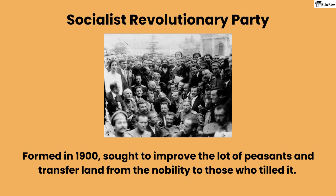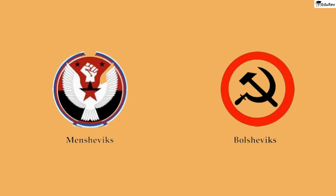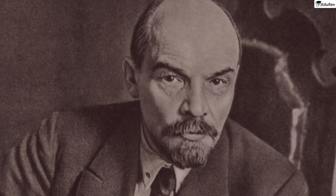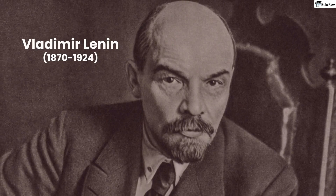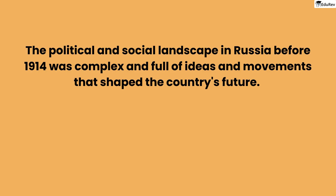However, the party was far from unified, and it soon split into two factions with vastly different visions for the future of the country. The Mensheviks favored an open party structure, one that was welcoming to all members, while the Bolsheviks, led by Vladimir Lenin, favored a more disciplined and controlled approach. For Lenin, this meant carefully vetting members and controlling their number and quality, even in the face of the repressive society of czarist Russia. The political and social landscape in Russia before 1914 was complex. This division eventually paved the way for the October Revolution of 1917, which saw the Bolsheviks seize power and establish the Soviet Union.